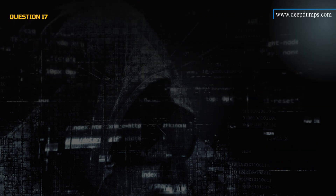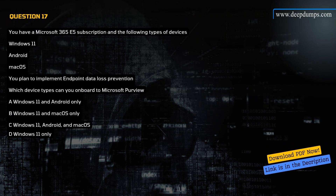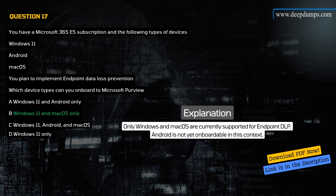Question 17. You have a Microsoft 365 E5 subscription with the following types of devices: Windows 11, Android, and Mac OS. You plan to implement Endpoint Data Loss Prevention. Which device types can you onboard to Microsoft Purview? A) Windows 11 and Android only, B) Windows 11 and Mac OS only, C) Windows 11, Android, and Mac OS, D) Windows 11 only. Correct answer is B. Explanation: Only Windows and Mac OS are currently supported for Endpoint DLP — Android is not yet onboardable in this context.